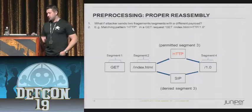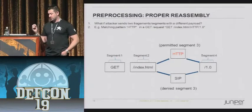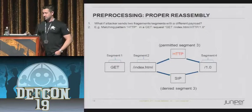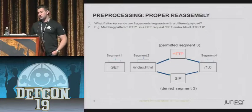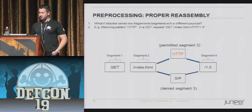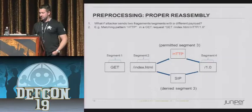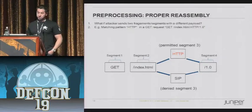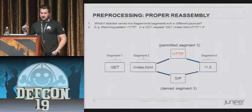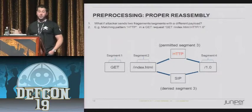In this example, if you were to send two segment threes - one was HTTP and one was SIP - how is the App ID engine going to know which one, if you want to allow HTTP but deny everything else? You could potentially get SIP through by piggybacking that packet at the same time if the pre-processing wasn't being done properly.